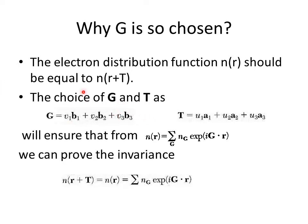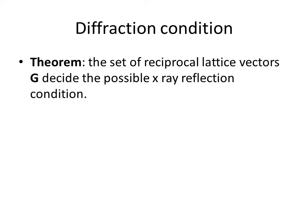The correct choice of G and T ensures that n(r), given by the Fourier sum, is invariant under translation T — that is, n(r + T) equals n(r). Both expressions reduce to the same summation over G of n_G times exponential i·G·r. The theorem states that the set of reciprocal lattice vectors G determines the possible x-ray reflection conditions.